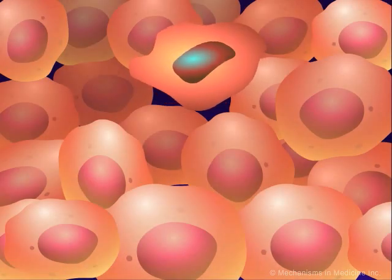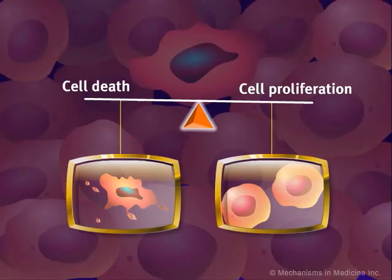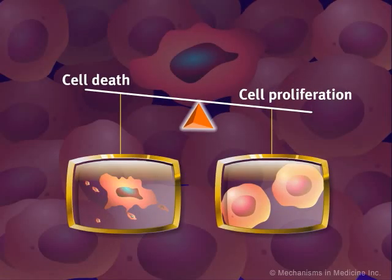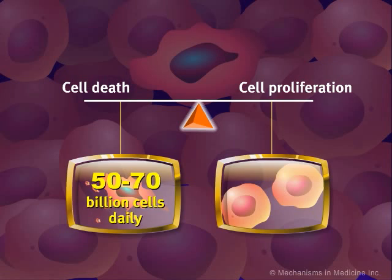Apoptosis occurs in normal cells to allow for removal of damaged cells, maintain a constant number of cells in regenerating tissues, and is an important part of embryogenesis. In an average human adult, 50 to 70 billion cells undergo apoptosis per day.